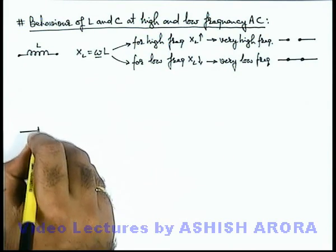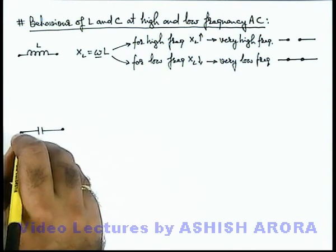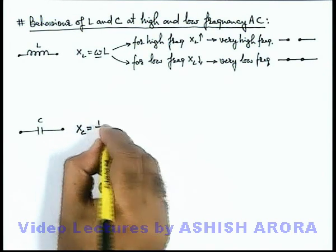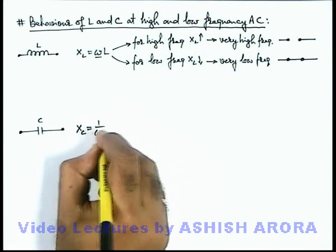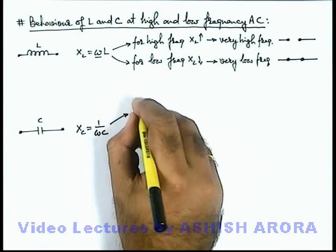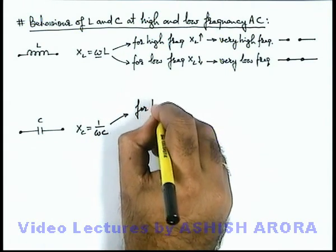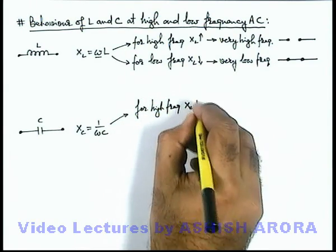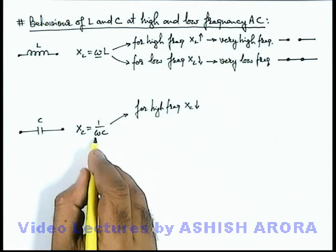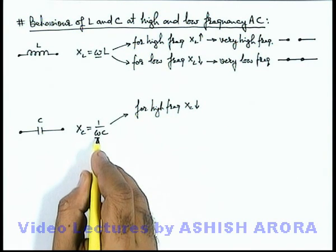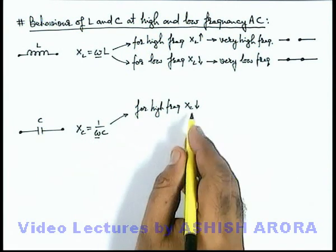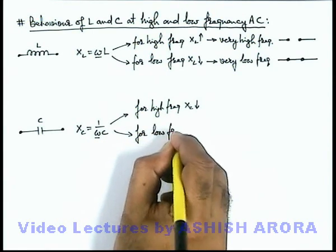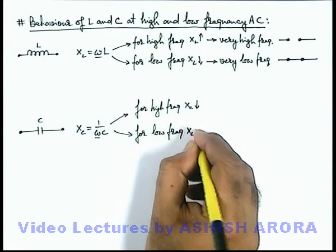Similarly, for a capacitor, its capacitive reactance is written as X-C, which equals 1 divided by omega C. For high frequencies, the value of X-C will be low, because as omega is high and X-C is inversely proportional to omega, the value of X-C will fall. Similarly, for low frequencies, the value of X-C will be high.